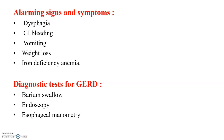The next diagnostic test is endoscopy. To confirm a diagnosis of GERD, upper endoscopy is performed. Endoscopy detects inflammation of the esophagus or other complications. The next test is esophageal manometry, which is a test used to measure the function of the lower esophageal sphincter.